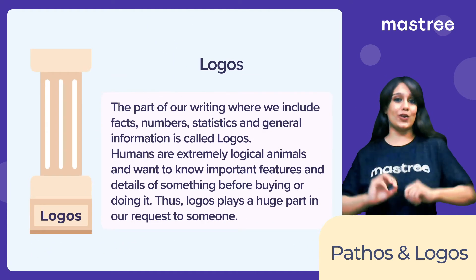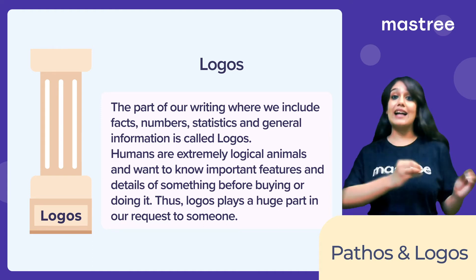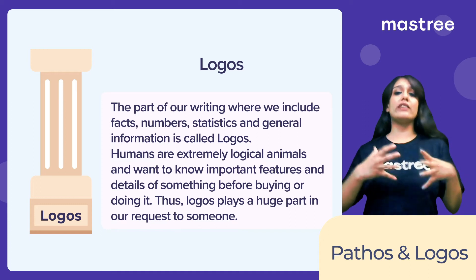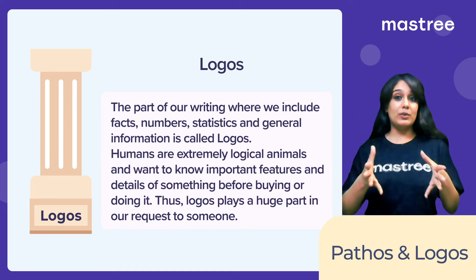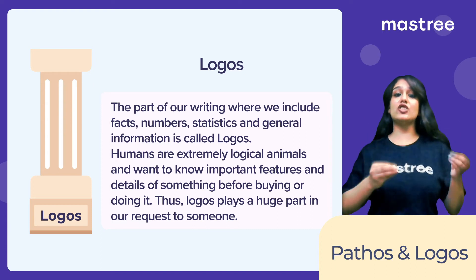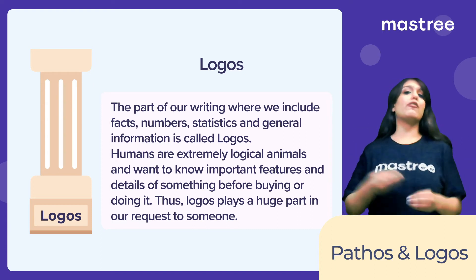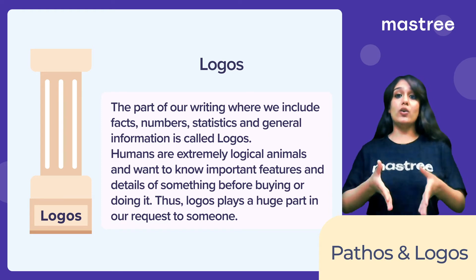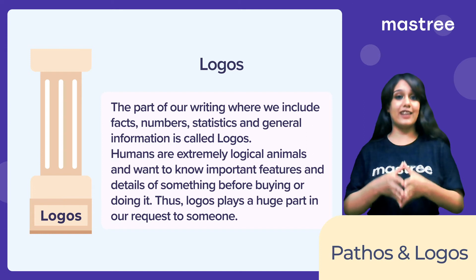This is logos — the part of our writing where we include facts, numbers, statistics, and general information to back our claims. Human beings are extremely logical animals and need to be well aware of important facts and details before buying something. Thus, logos plays a huge part when we are trying to be convincing.